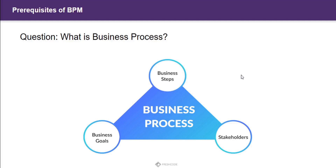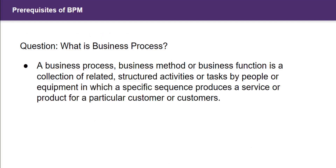So what we are dealing with is business process management. We understood what a process is, we understood what a business process is, and now we have to understand what is business process management. Management is the art of getting things done through others. A business process, business method, or business function is a collection of related structured activities or tasks by people.